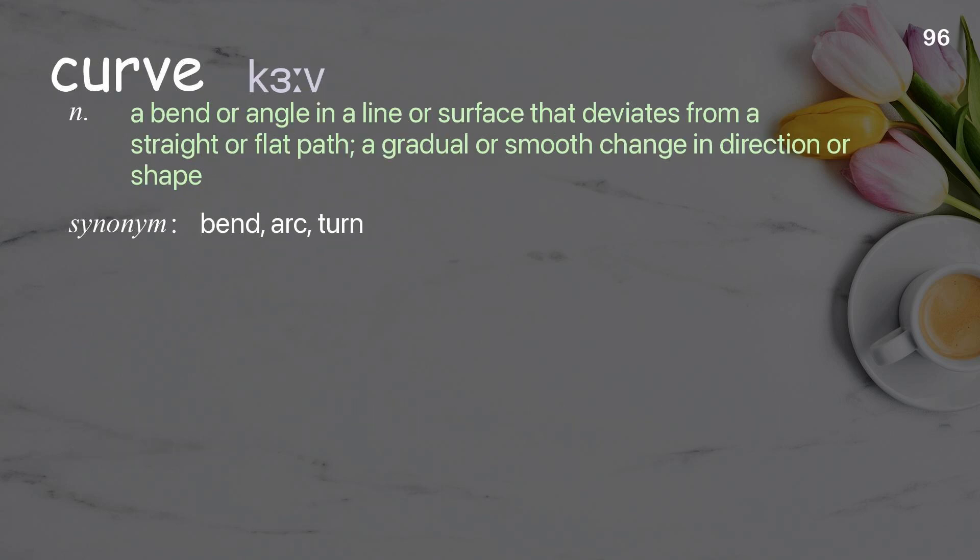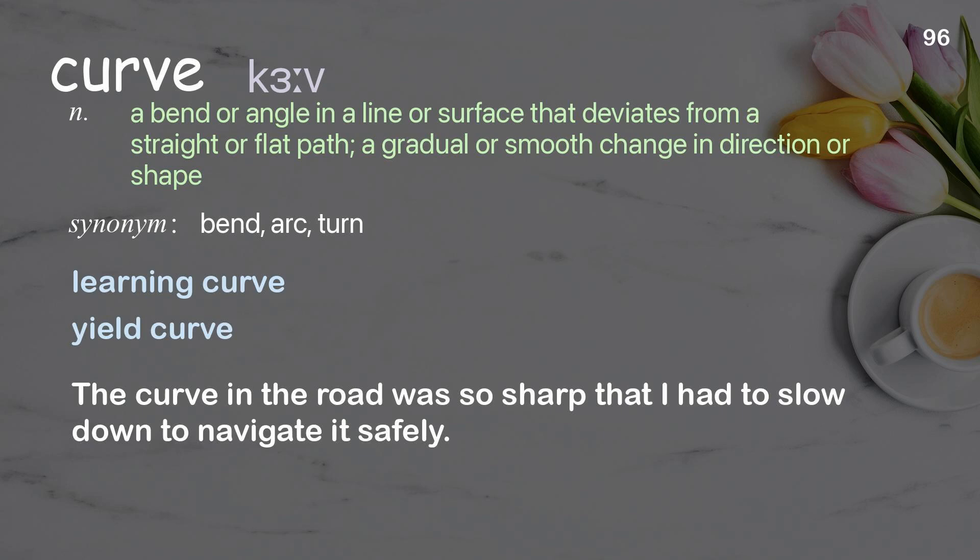Curve: a bend or angle in a line or surface that deviates from a straight or flat path; a gradual or smooth change in direction or shape. Examples: learning curve, yield curve. The curve in the road was so sharp that I had to slow down to navigate it safely.